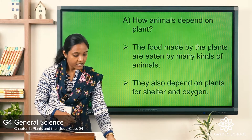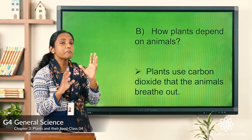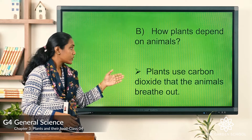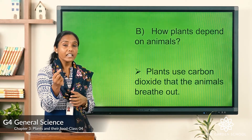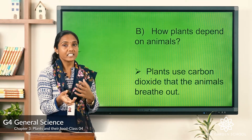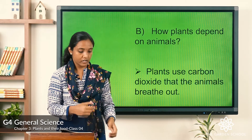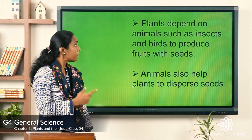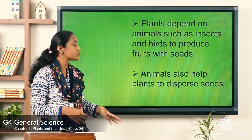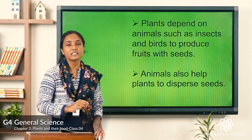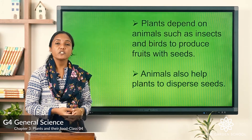Now let us see how plants depend on animals. Plants use the carbon dioxide released by animals for the process of making food. Plants also depend on animals such as insects and birds to produce fruits with seeds.